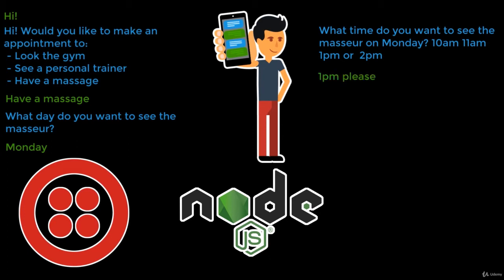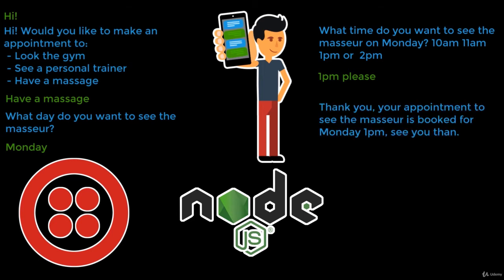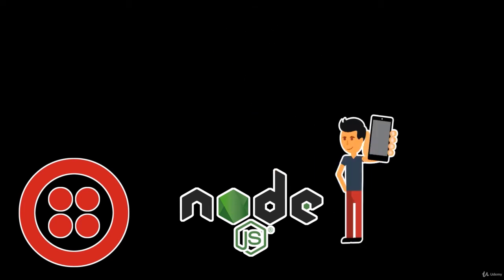The customer replies '1 p.m.' Finally, our application would send a message confirming all the details. The message would look like this: 'Thank you. Your appointment to see the masseur is booked for Monday, 1 p.m. See you then.'